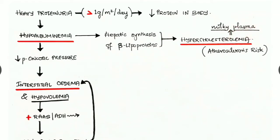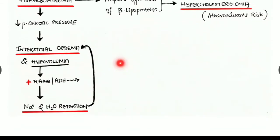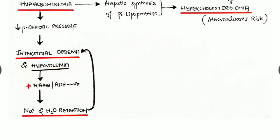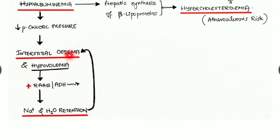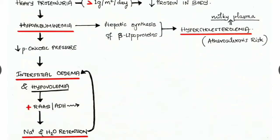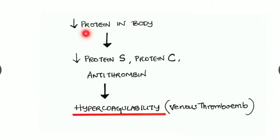Hypercholesterolemia — high cholesterol or hyperlipidemia — increases the risk of atherosclerosis, and the plasma will be milky in appearance. Hypoalbuminemia decreases plasma oncotic pressure, leading to interstitial edema and hypovolemia. This hypovolemic state stimulates the renin-angiotensin-aldosterone system and causes secretion of antidiuretic hormone, resulting in sodium and water retention, which further worsens interstitial edema.